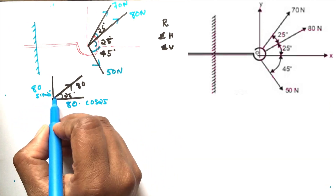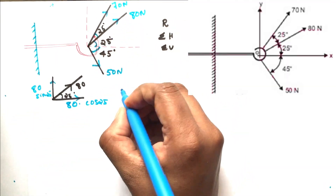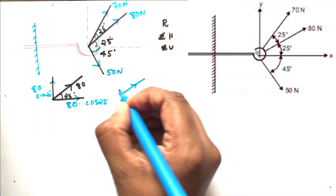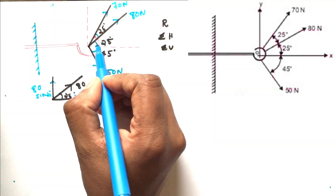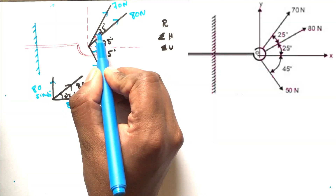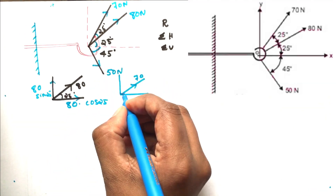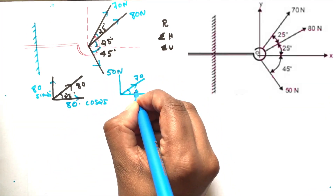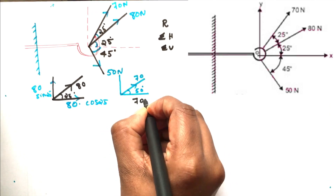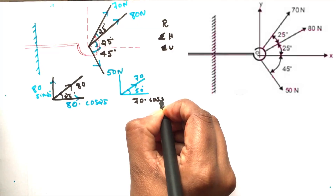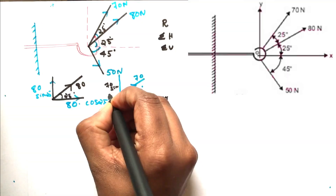These are the two components of the same force. Now for the 70 Newton force, on the horizontal angle it becomes 25 degrees, so the total angle is 50 degrees. Then the horizontal component is 70 cos 50 and the vertical component is 70 sin 50.